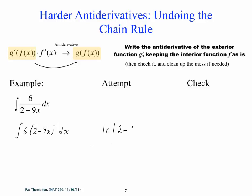When you go backwards, because natural log is only defined for positive values of its argument, but this could be defined for all values of x — negative and positive — you need absolute values around the natural log when you do antidifferentiation. So then we'll do plus C. And we'll do our check. The derivative gives us 1 over 2 minus 9x times negative 9 by the chain rule.